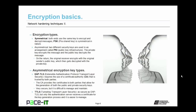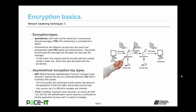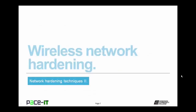There are two main types of asymmetrical encryption keys. There is EAP TLS — Extensible Authentication Protocol Transport Layer Security. It requires the use of a Certificate Authority, or CA, trusted by both parties. The CA provides certificates to both parties for generating both public and private security keys. It's very secure but difficult to manage and maintain. Then there's TTLS — Tunneling Transport Layer Security. It's as secure as EAP TLS, but only the Authentication Server receives a certificate for the key generation process, making it easier to manage and maintain.